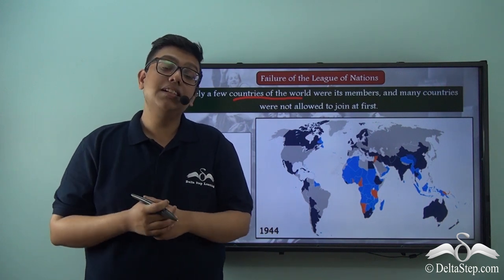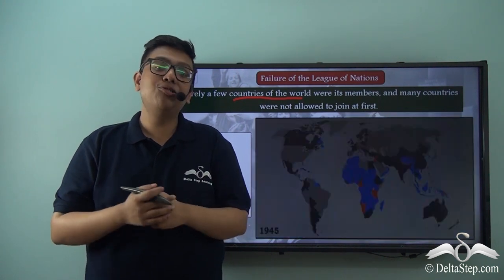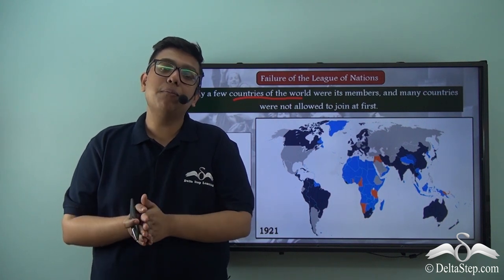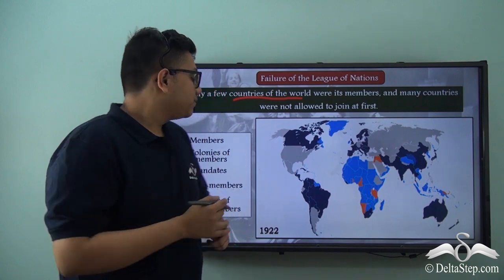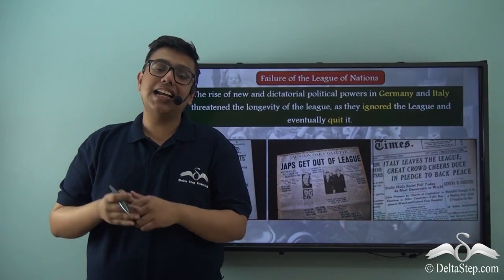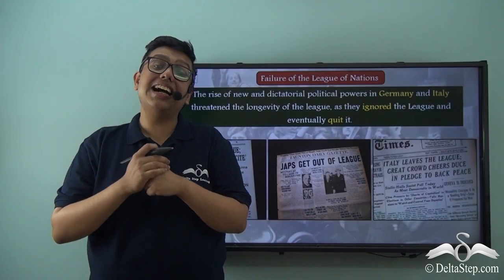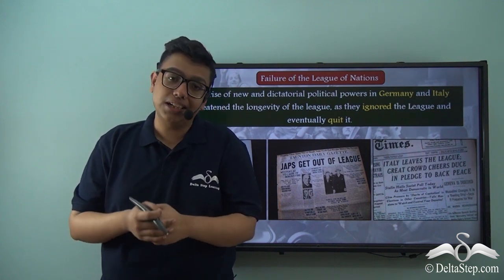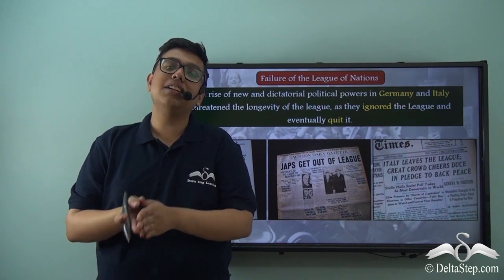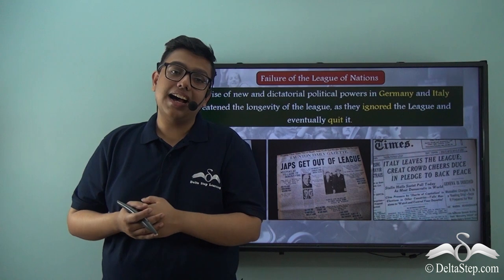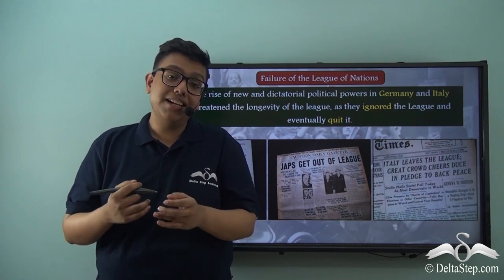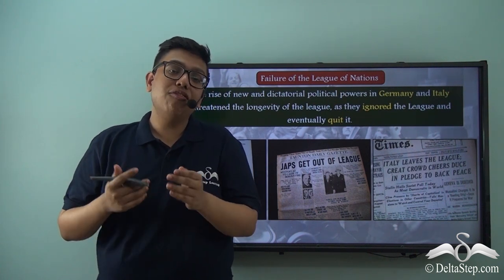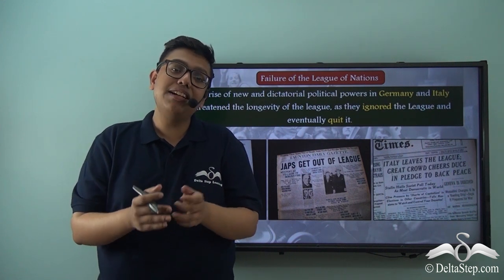The League of Nations did not allow the nations that lost the First World War to join it, because the allied nations felt that the nations that caused the war should not be part of the peacemaking process. That is why Germany, the country on which the entire blame of the First World War was put, was not allowed to join the League at first, even though it was made to sign the covenant of the League of Nations whereby it declared that it would not wage war on other countries. The impact was that these core nations were not allowed to join the very peace process and were therefore left separated.